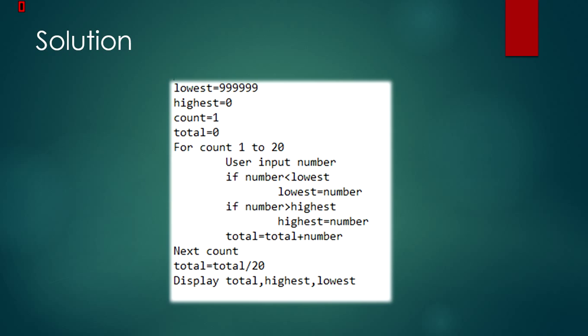This is the solution. We are using the count loop because we have a determined number of times the user should input a number. Lowest has to be a very high number because if it was zero, the line if number is lower than lowest, lowest equals number, might not even execute. After it repeats 20 times, it'll divide the total by 20 and display all three of them.